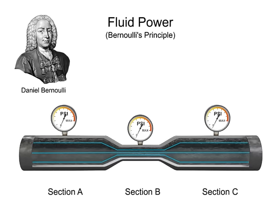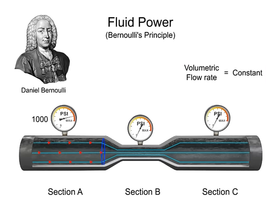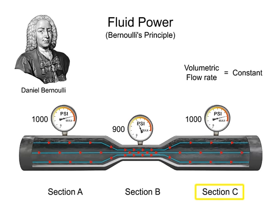Bernoulli's Principle states that an increase in the speed of an incompressible fluid occurs simultaneously with a decrease in pressure. This is illustrated by the flow of water through a pipe. The volume of water flow through all three sections is the same. When the water's flow is restricted in Section B, the speed of the water increases to maintain the same amount of volumetric flow. This increase of speed simultaneously causes a decrease in pressure. When the flow of water reaches Section C, the inverse occurs: the water flow decreases and the pressure increases.